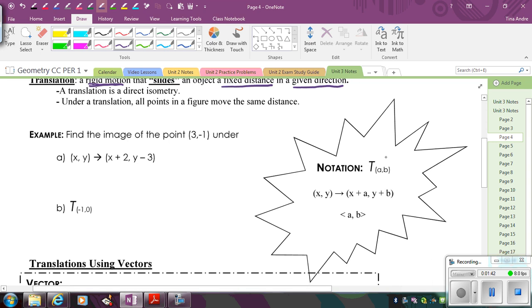This first one is called your function notation. So capital T stands for the translation, and A and B are telling you how to move. And then this next one is called mapping notation. So this is basically, here's your original. You're going to map it onto this new coordinate. So the new coordinate is going to be taking the original and then adding A and B to the X and Y values. And then this last one is called vector notation, which we'll talk about in a little bit, what that means.